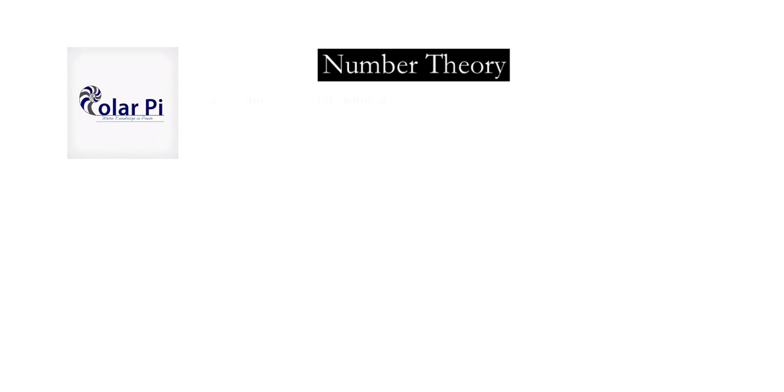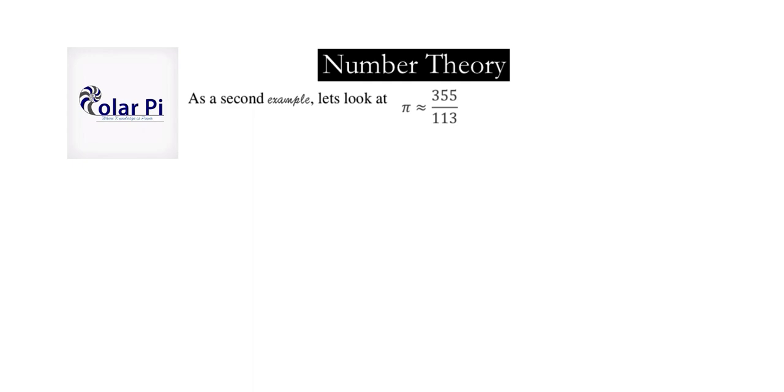Before I conclude the video, let's look at one more example of taking a given rational number, namely this guy here, and writing it as a continued fraction, just so you have a second example. The process starts by doing 355 over 113 and finding the quotient, which is 3, and then the remainder 16 over the divisor.